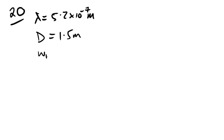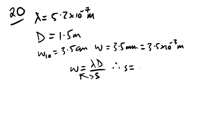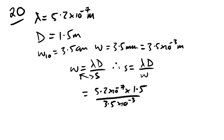Question 20: double-slit with wavelength 5.2×10⁻⁷ m, distance 1.5 m, 10-fringe width 3.5 cm so one fringe width w = 3.5×10⁻³ m. Using w = λD/s, slit separation s = λD/w = (5.2×10⁻⁷ × 1.5) / (3.5×10⁻³) ≈ 2.2×10⁻⁴ m. The answer is D.